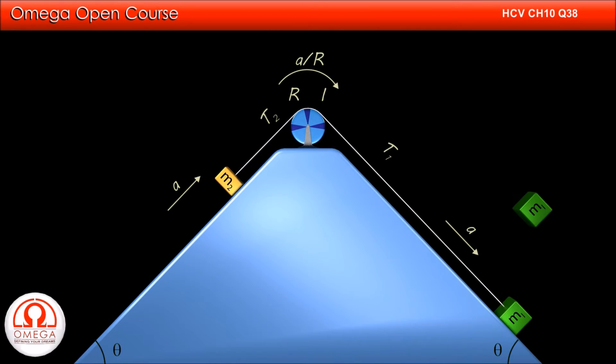Now, let us draw the free body diagram of the 4 kg block. Gravitational force of M1g acts in downward direction. The component of the gravity along the incline is M1g sin theta and perpendicular to the incline is M1g cos theta.